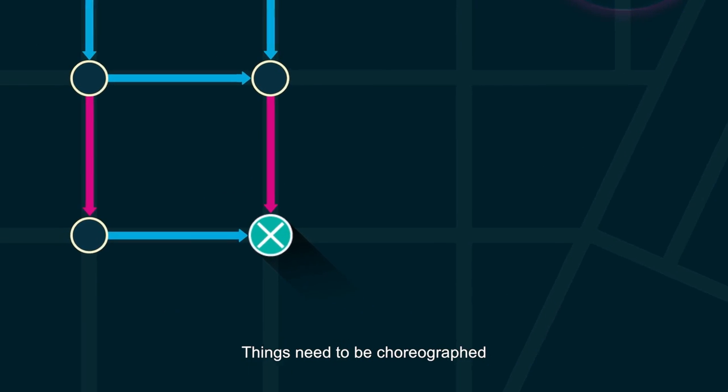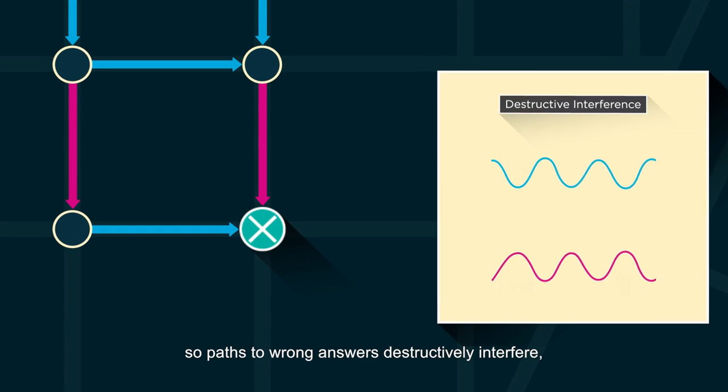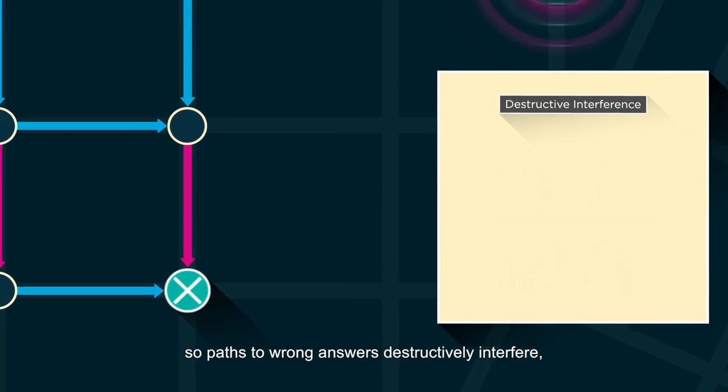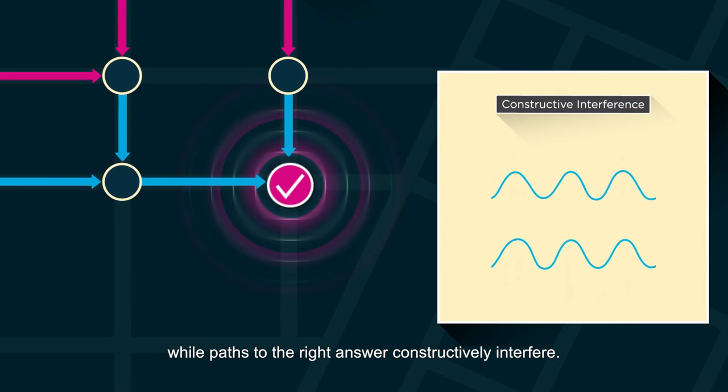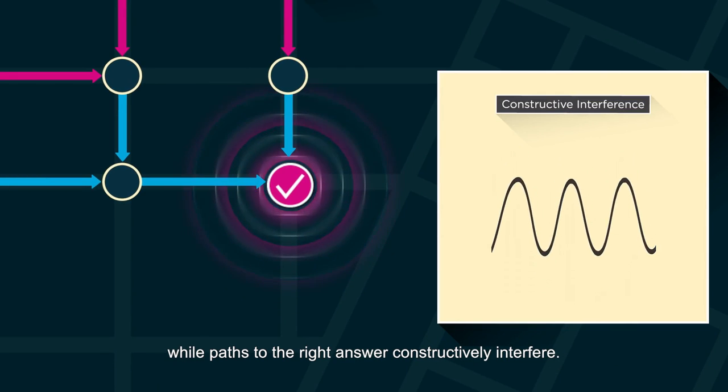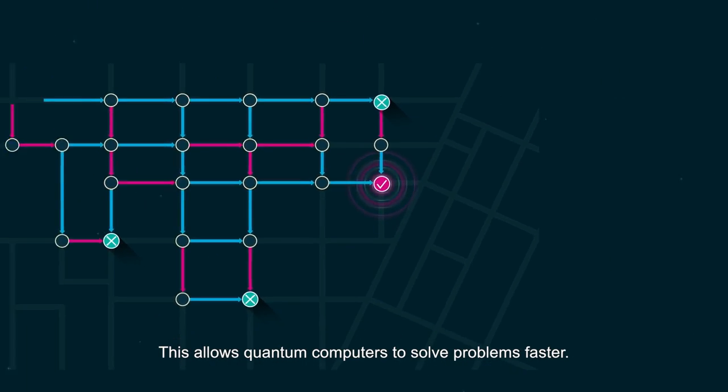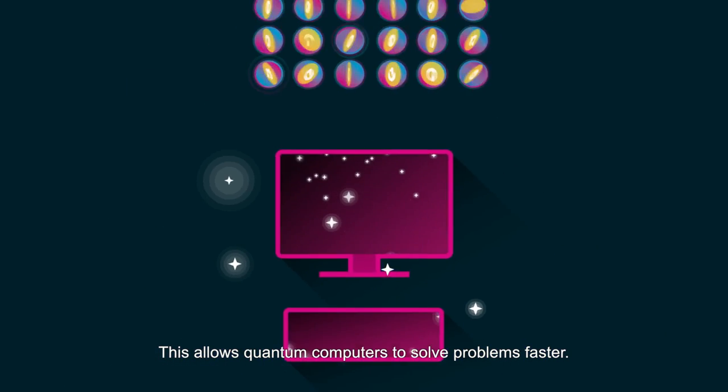Things need to be choreographed, so paths to wrong answers destructively interfere, while paths to the right answer constructively interfere. This allows quantum computers to solve problems faster.